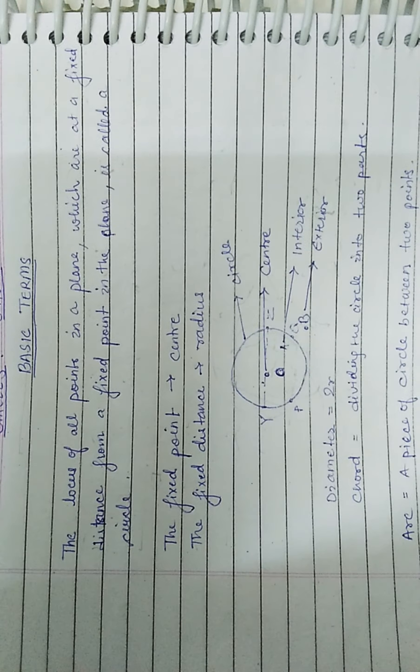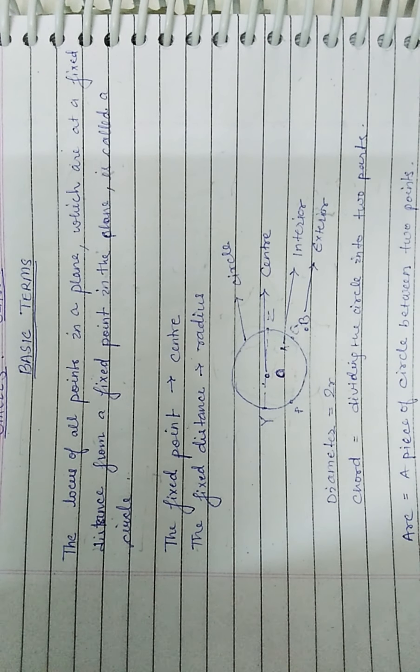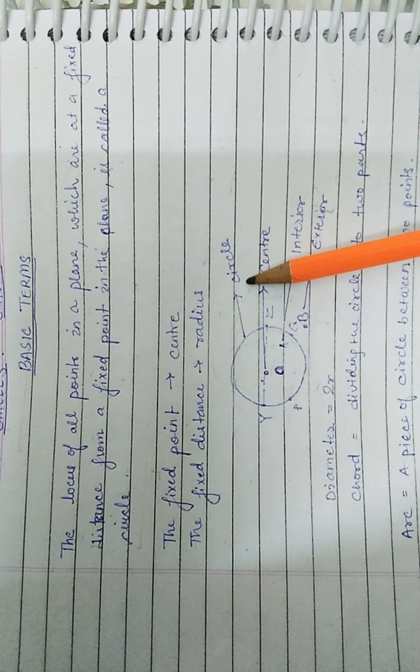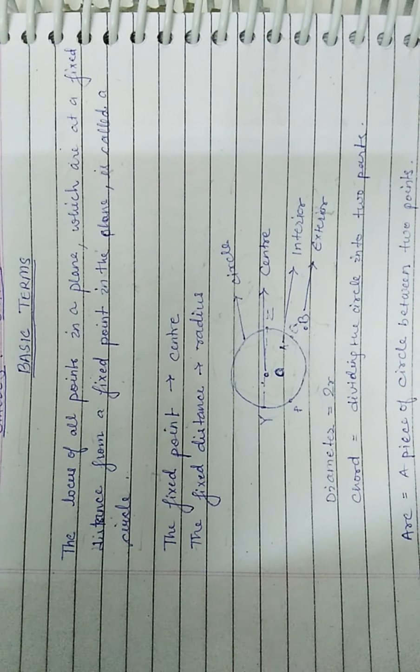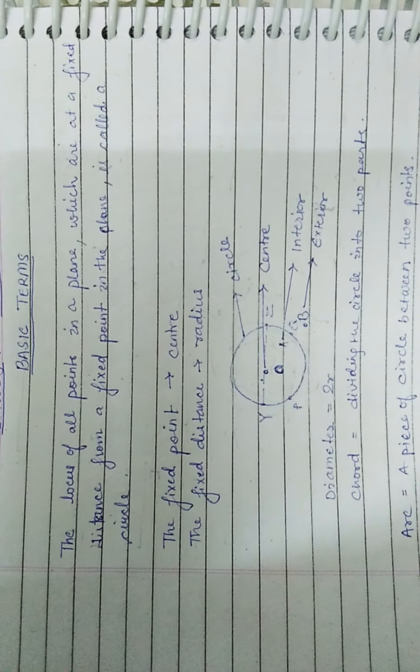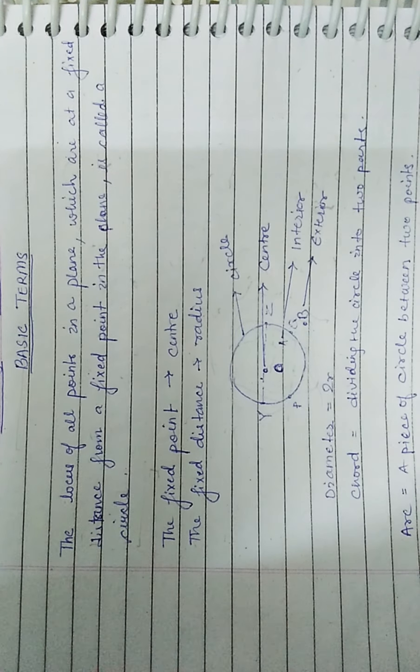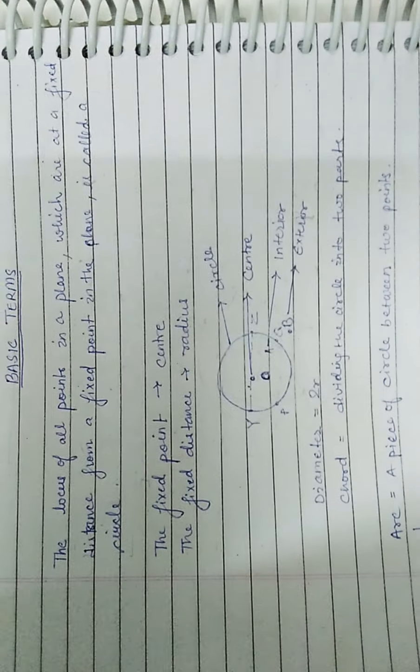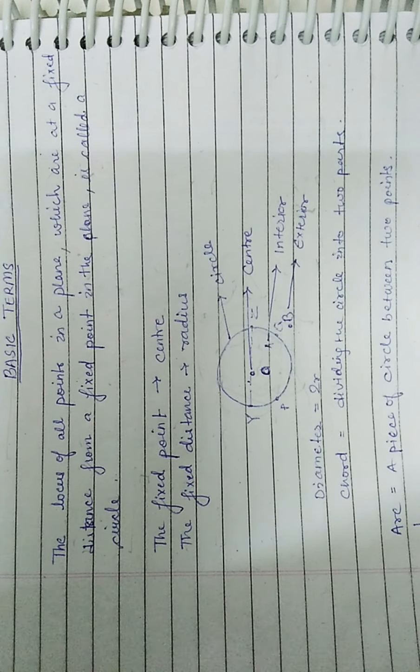Let us talk about the diameter. Diameter is basically two times radius. The diameter always passes through the center of the circle, and diameter is the largest chord. A chord is something which divides the circle into two parts - it can be half, more than half, or less than half.